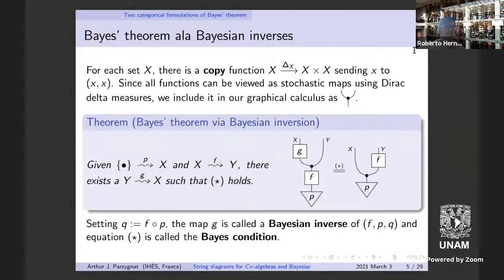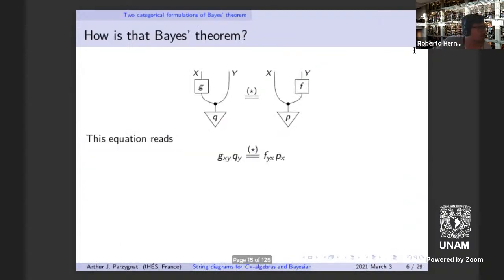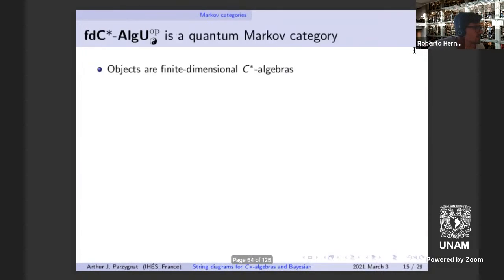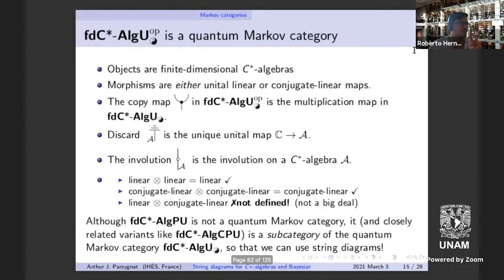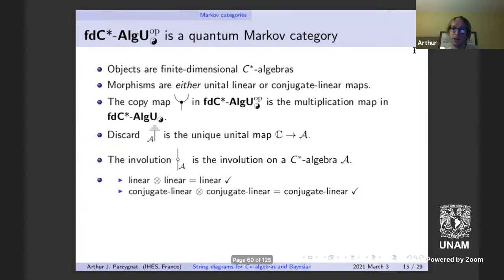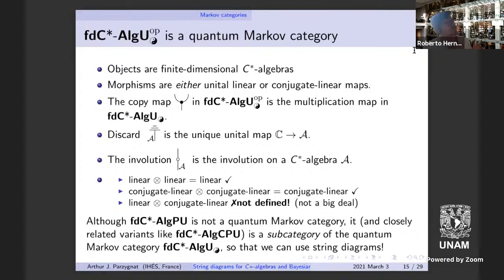A second question: around the slide where the category fails to be monoidal due to incompatibility between linear and conjugate linear maps — you got around that by embedding into the yin-yang category. Could you repeat some details of that embedding? You do have a faithful embedding, though not necessarily full. For instance, positive unital maps embed into this larger context, but the larger context also contains linear maps like the multiplication map.